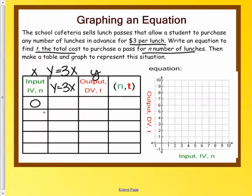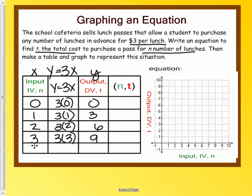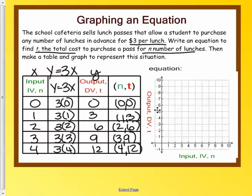So if I don't buy any, then I pay nothing because three times zero gives me zero. If I buy one, I would pay $3. If I buy two, I would pay $6. If I buy three and so on and so forth. So if I want to write these as coordinate points, zero comma zero, one comma three, two comma six, three nine, and four twelve. Now let's plot it.